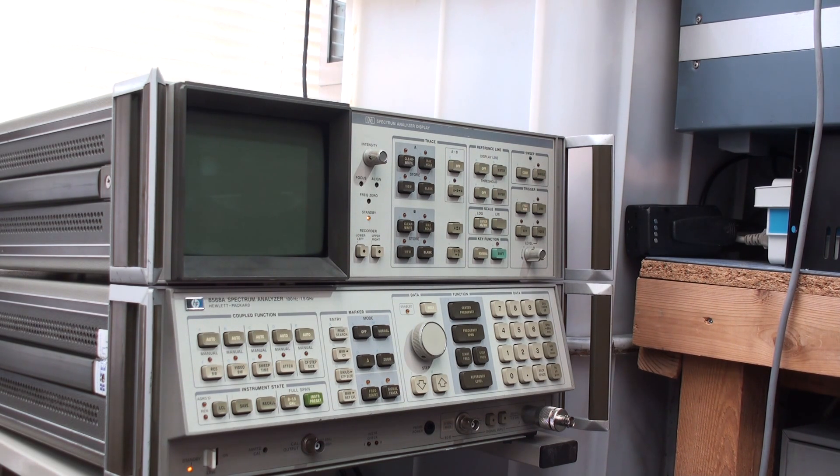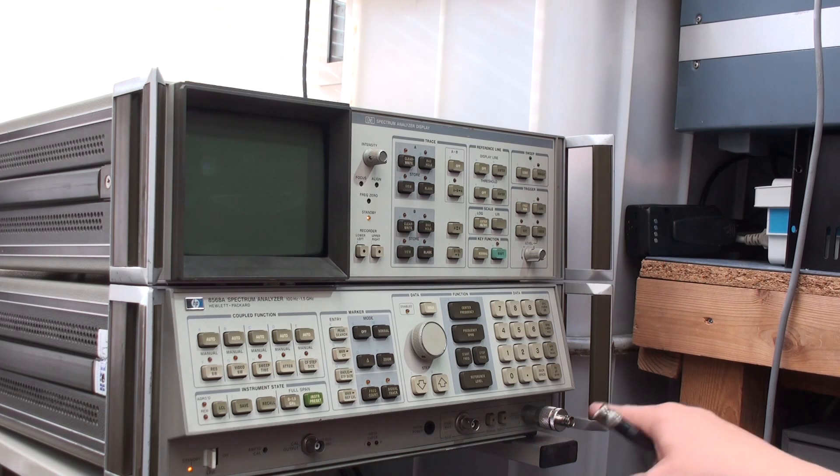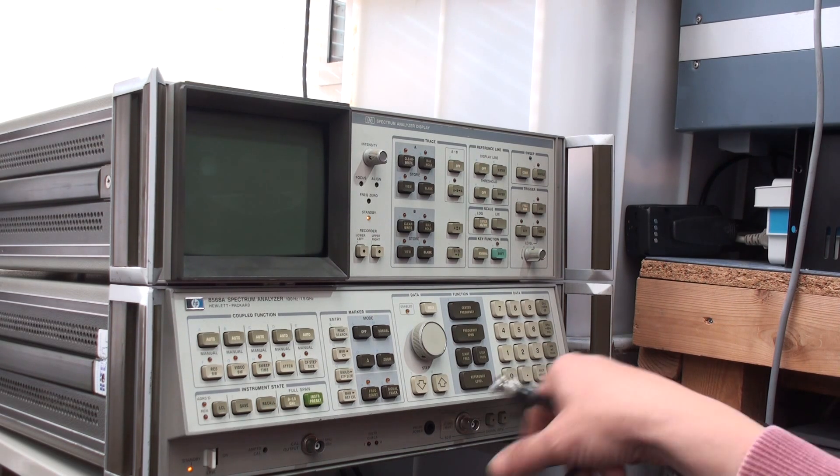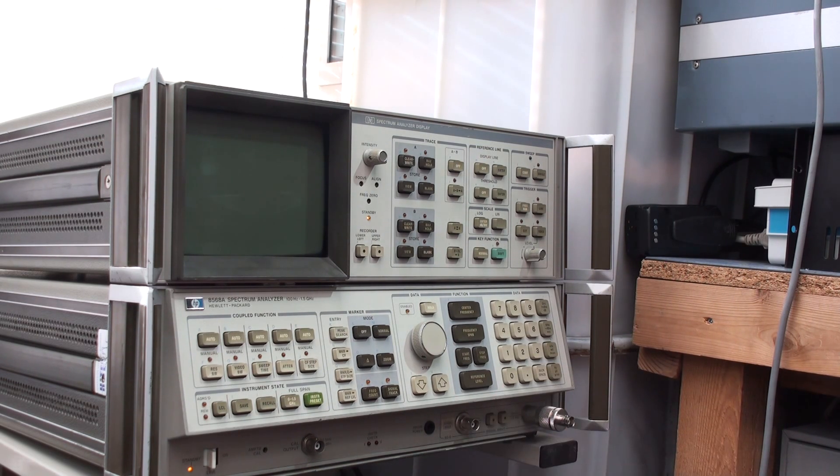Particularly this spectrum analyzer has caused a few problems. One of the faults it's recently developed is I can't do the calibration run anymore. There's a calibration routine where you take a minus 10 dBm output from the calibration socket here and feed it into its input and adjust this calibrator potentiometer to the correct level at minus 10 dBm.